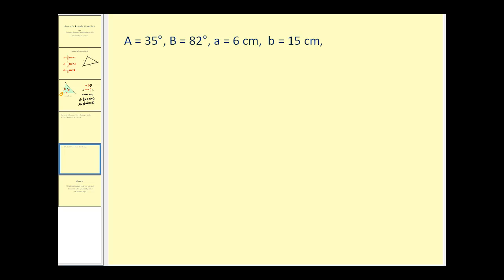Let's take a look at a problem. Let's sketch a triangle and label the given information. Angle A is 35 degrees, angle B is 82 degrees, side A is 6 centimeters, and side B is 15 centimeters. Remember, to use the area formula, we have to have the included angle. So we need to find the measure of angle C before we can apply that area formula. We can do that because the sum of the interior angles must be 180 degrees. So angle C must be 63 degrees.